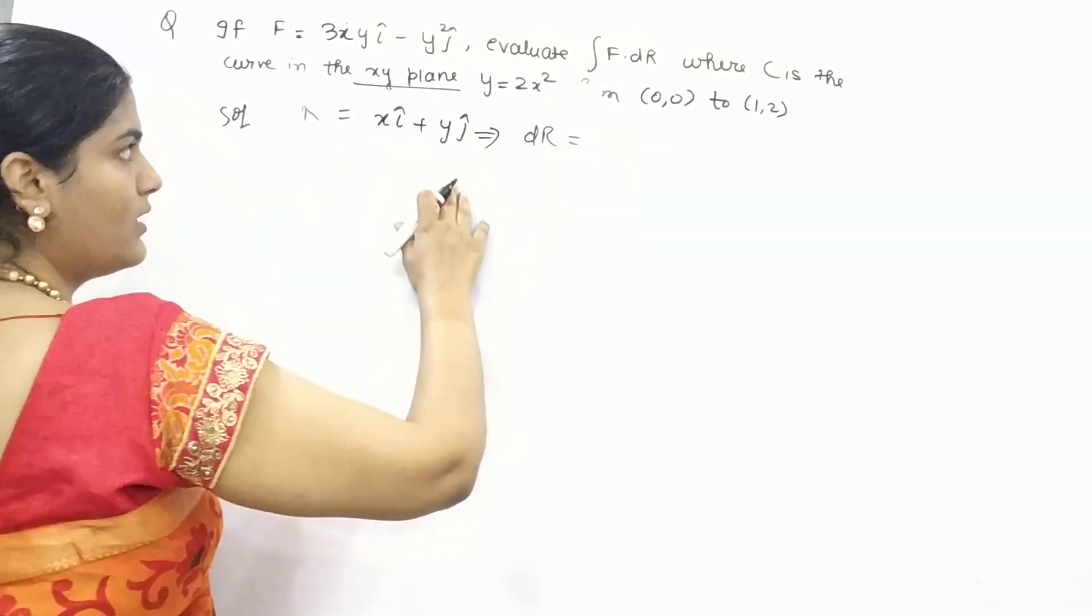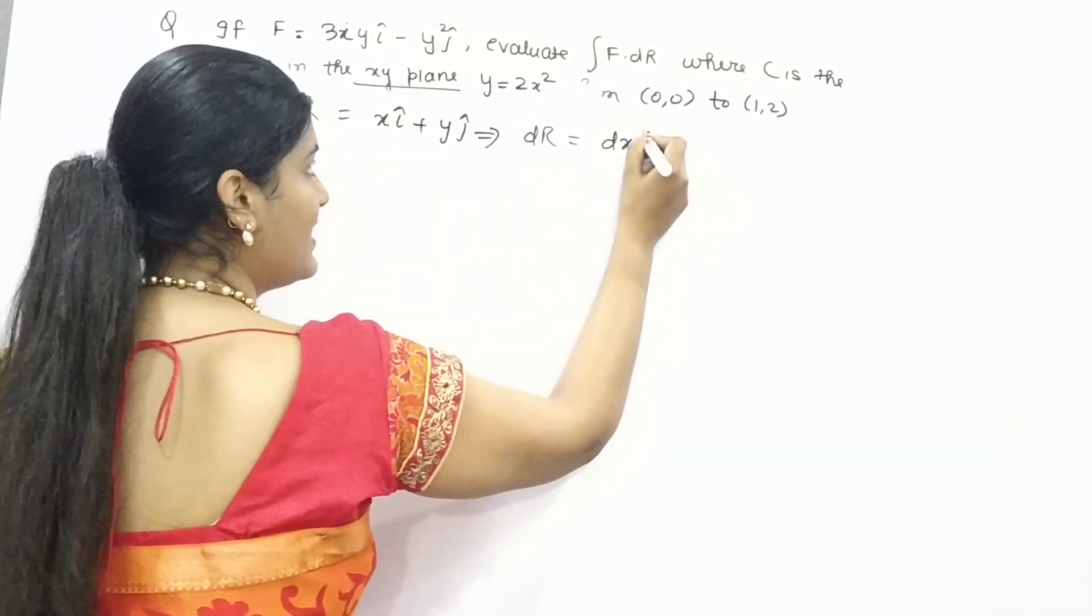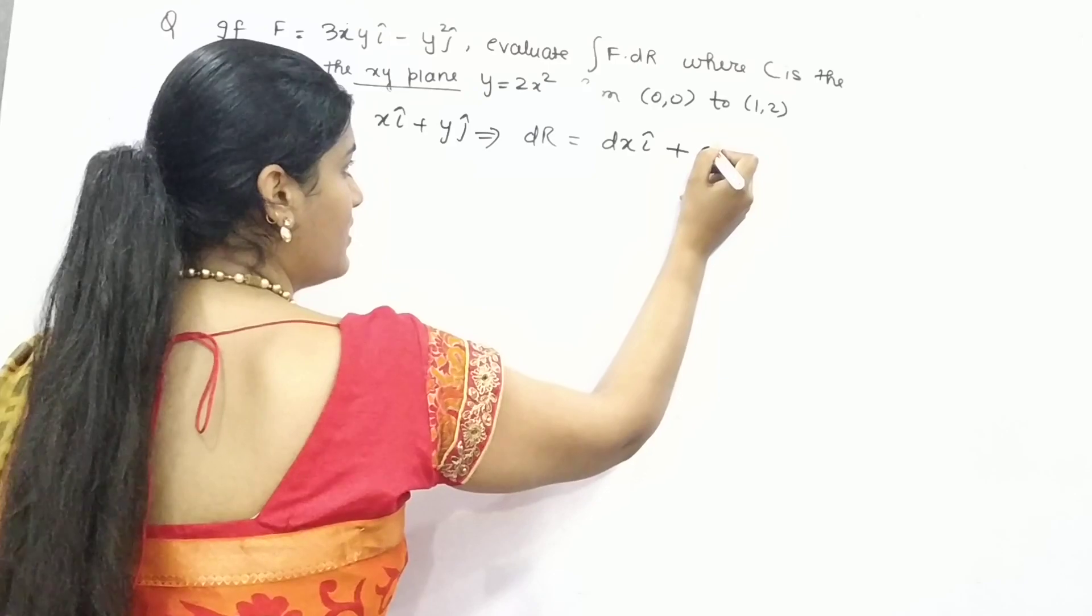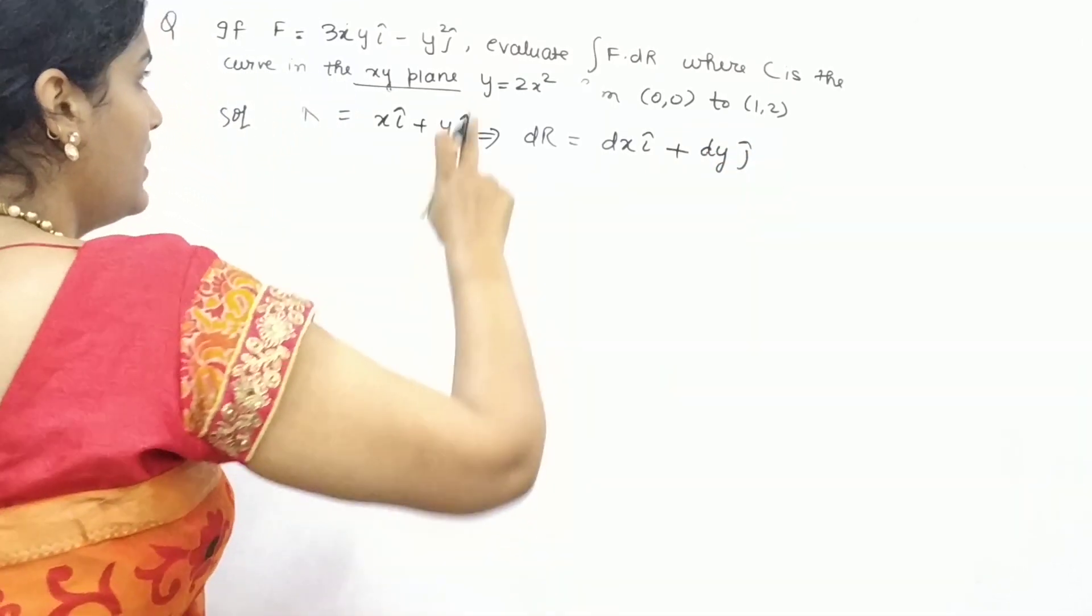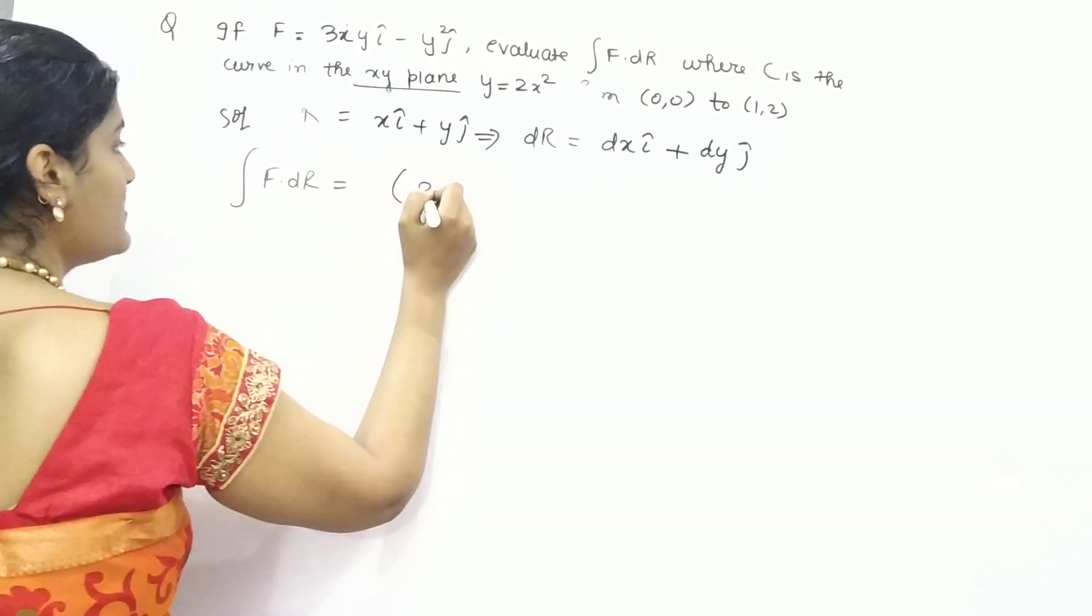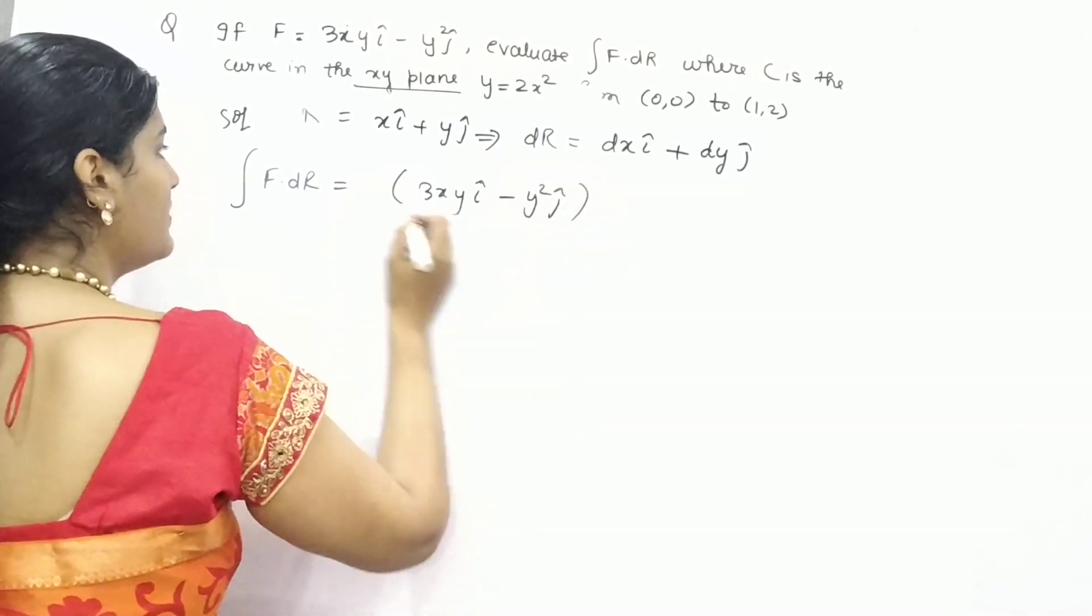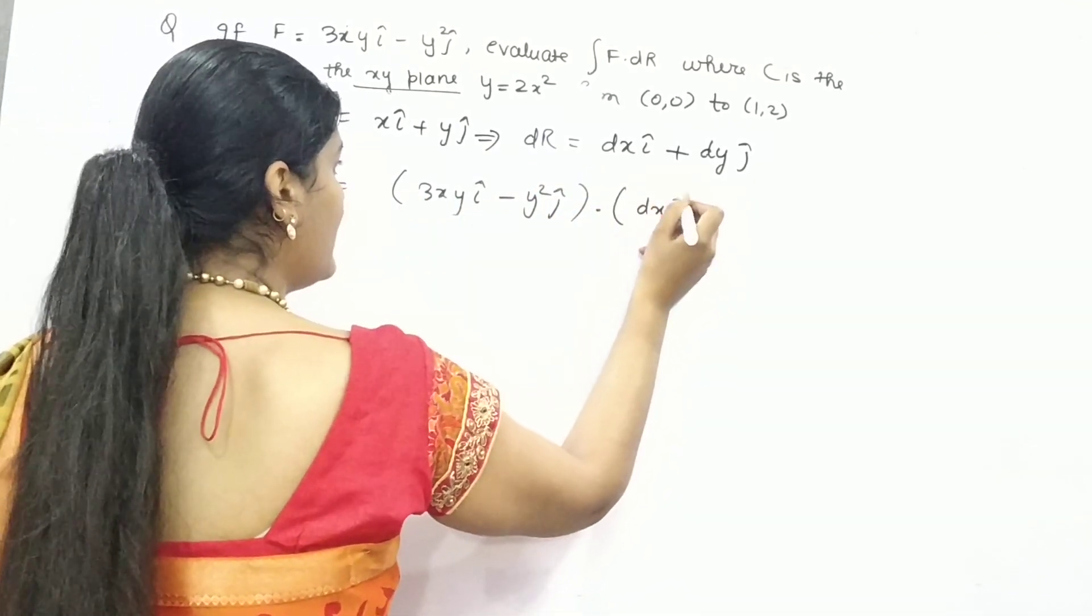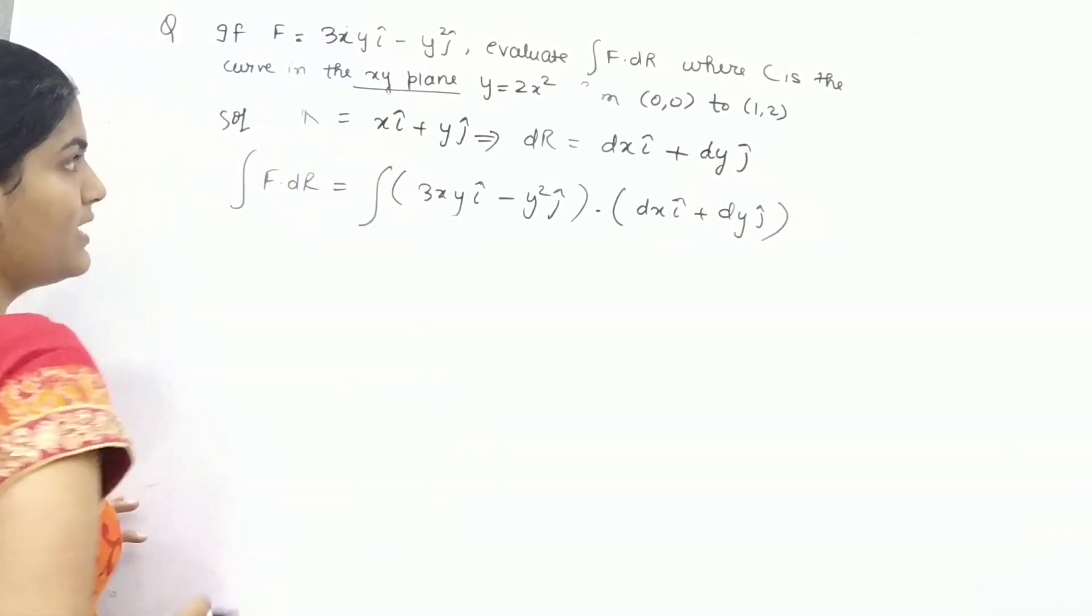Taking differentiation, the differentiation of x is 1 but with respect to x. This is dy. Now for this, your f is 3xy i cap minus y square j cap dot your dr is dxi plus dy j.